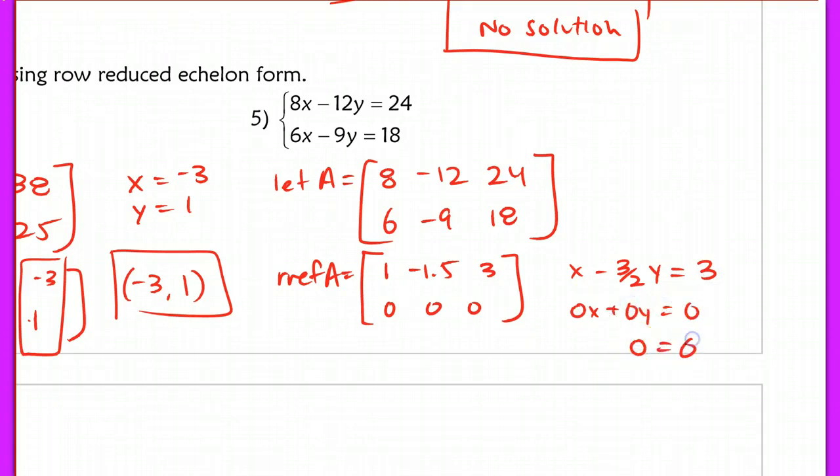I basically get the statement 0 equals 0. We know that whenever we get the statement that says 0 equals 0, or a true statement, that this has an infinite number of solutions. So this is actually the linear system, or the line of the equation that all the points are on.